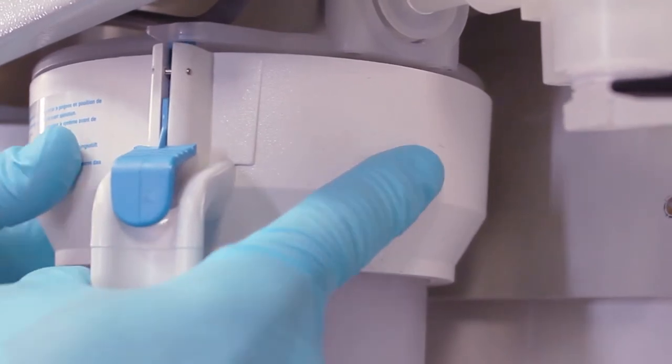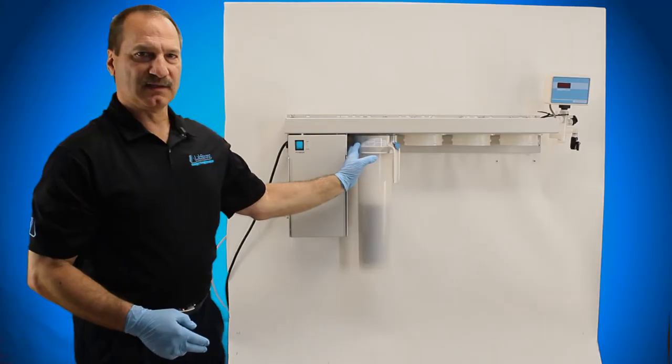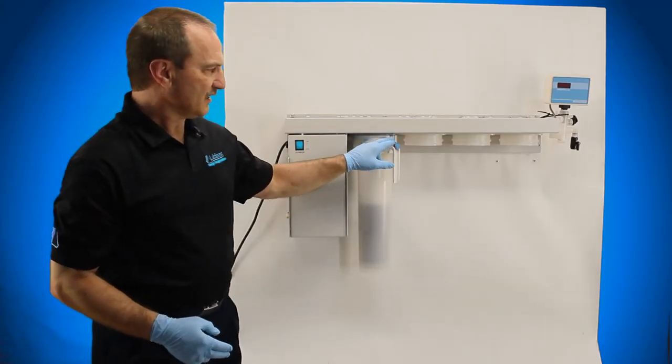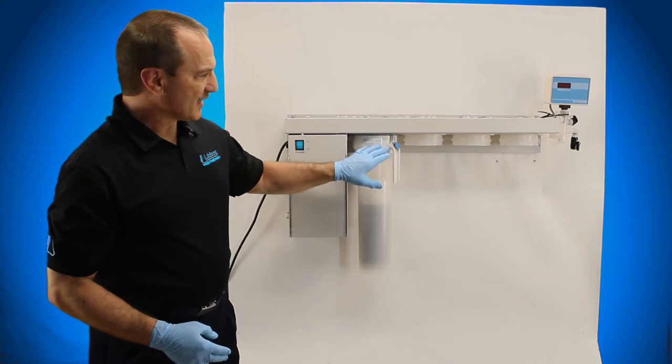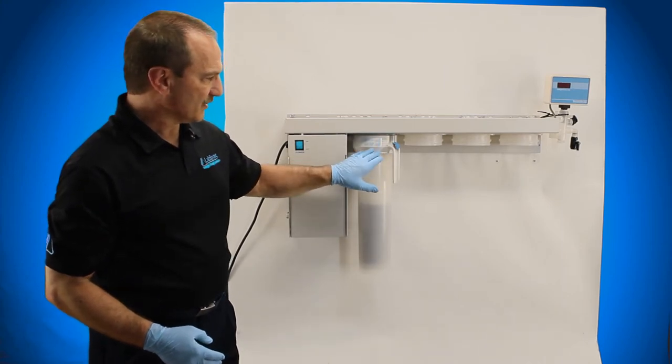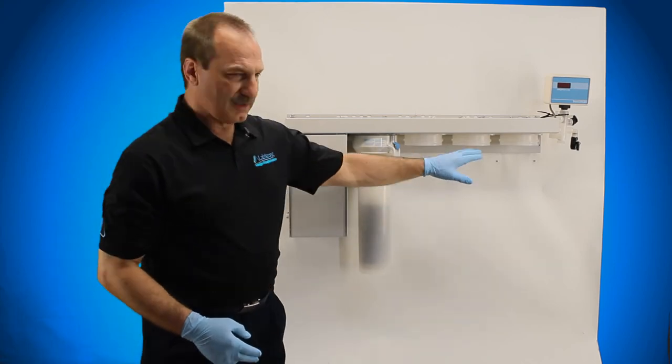So you hear one, two, three clicks and it's in place. You don't necessarily have to get it to the third one, but at least to the first one. It depends on the tolerance of the canister, the handle ring and the head section. You're going to do this for each and every unit.